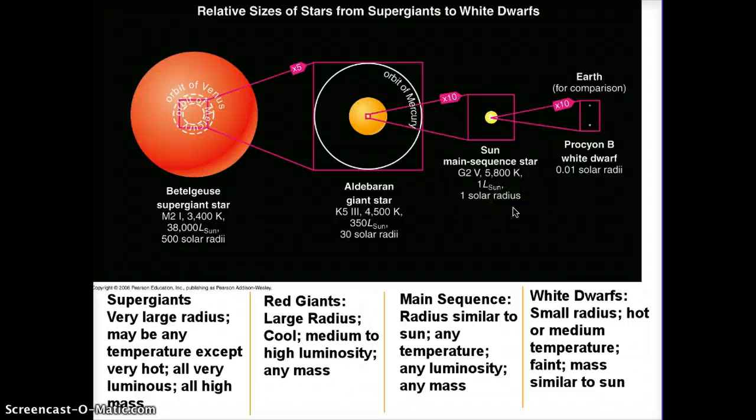In this lecture, I'm going to sum up a little bit of what we learned from the HR diagram in these four different categories of stars: the supergiants, the red giants, the main sequence, and the white dwarfs.